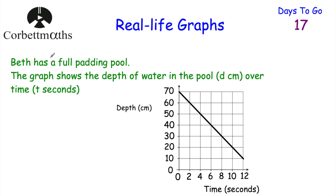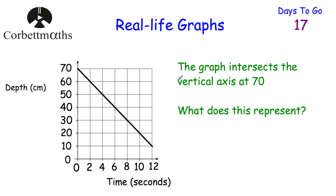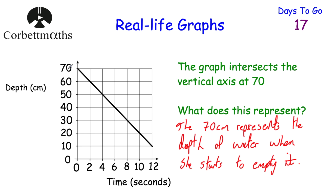Next question: Beth's got a full paddle pool and the graph shows the depth of water in it over time. At the start, the depth is 70 centimetres - it's full. As time goes on, the depth decreases, meaning the water is being emptied. At 12 seconds, the depth is 10 centimetres. The graph intersects the vertical axis at 70 - what does that represent? Since Beth is emptying a full paddle pool, that 70 centimetres represents the depth of water when she starts to empty it.